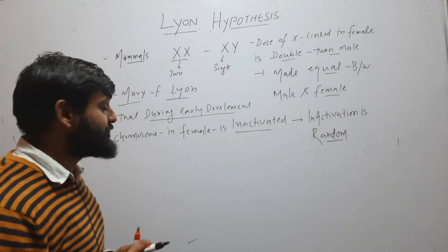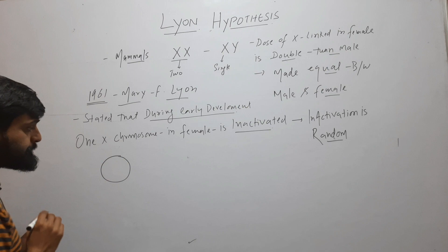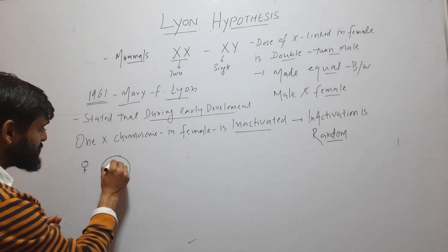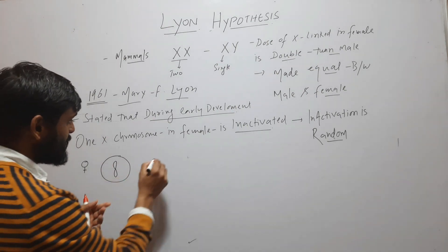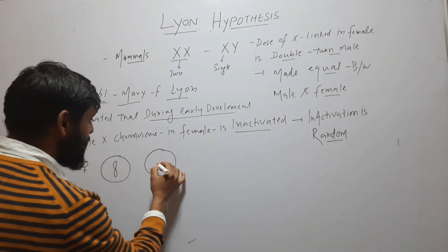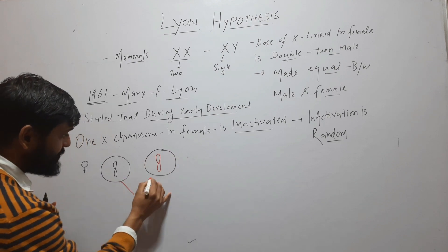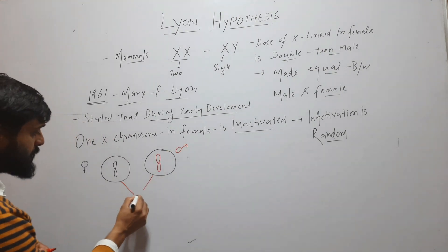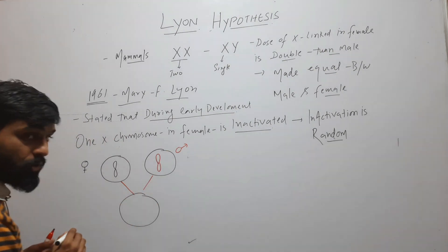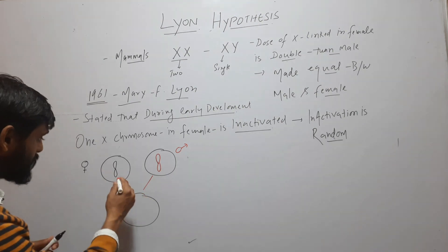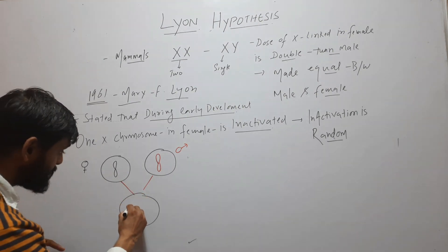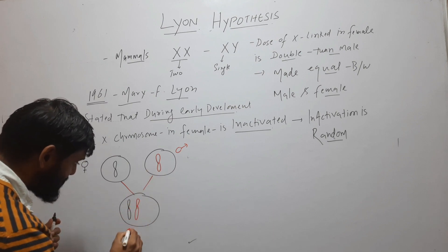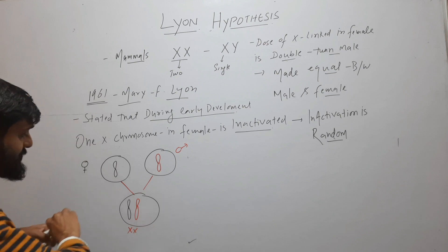Let's understand this with a diagram. Suppose this is the female gamete, which has one X chromosome, and this is the male gamete, which has another X chromosome. When they fuse, they form a zygote, and this zygote has two X chromosomes — one from the mother and another from the father. So these are the two X chromosomes and this is the zygote.